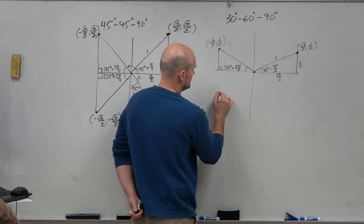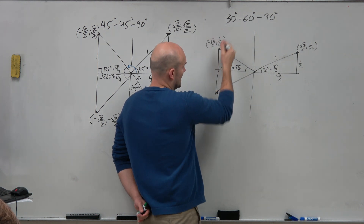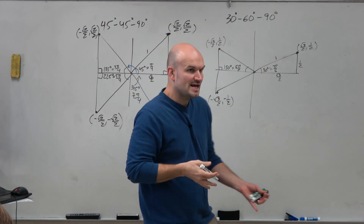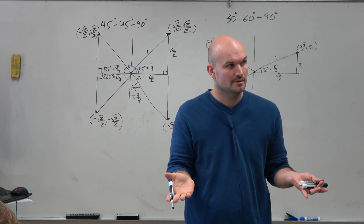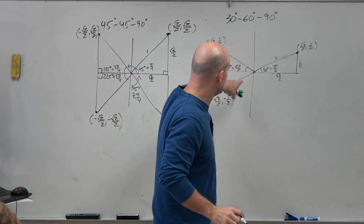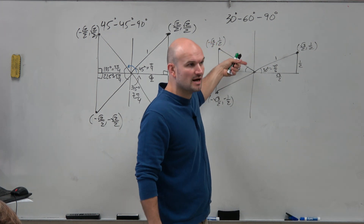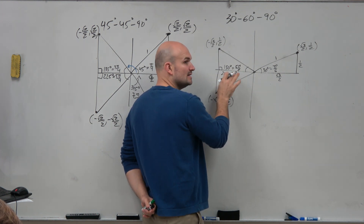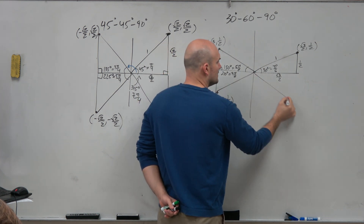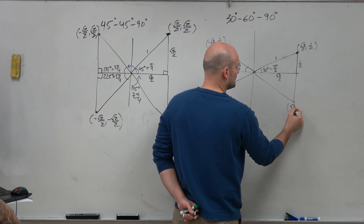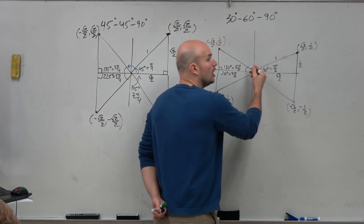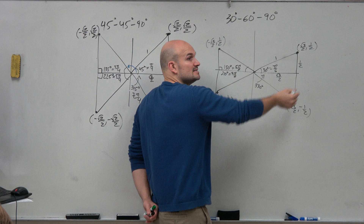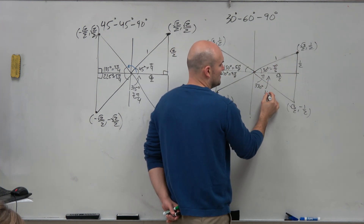The points are not changing — only the signs change based on which quadrant we're in. The reference angles are all 30 degrees or pi over 6. For the third quadrant: 180 plus 30 is 210, and that's 7 pi over 6. For the fourth quadrant, the coordinate point is positive square root of 3 over 2, negative 1 half. 360 minus 30 is 330 degrees, and 12 pi over 6 minus pi over 6 is 11 pi over 6.